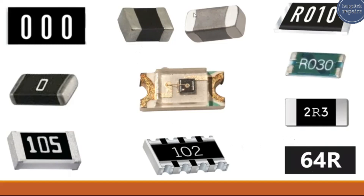This is a thermistor resistor. This kind of resistor depends on temperature — its resistance changes depending on temperature. Over here, this is a photo resistor. Its resistance changes in accordance with the level of light.